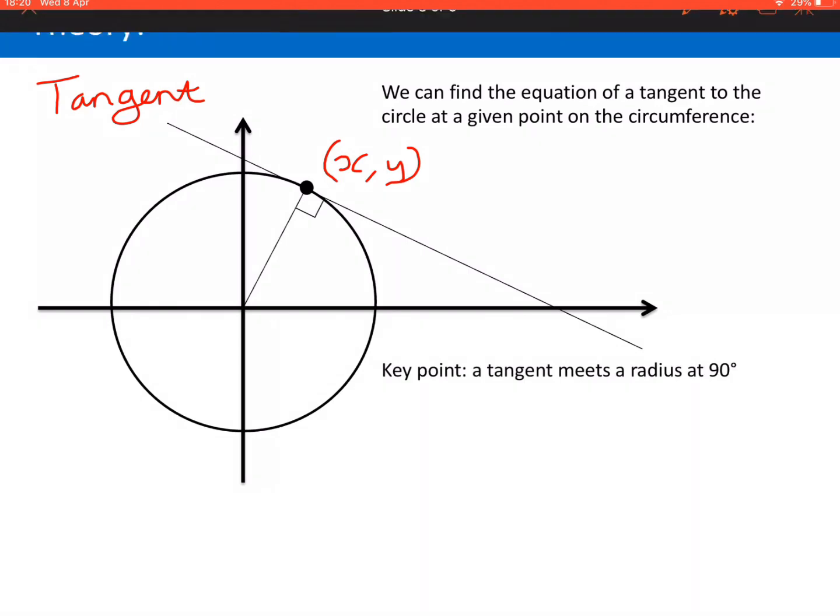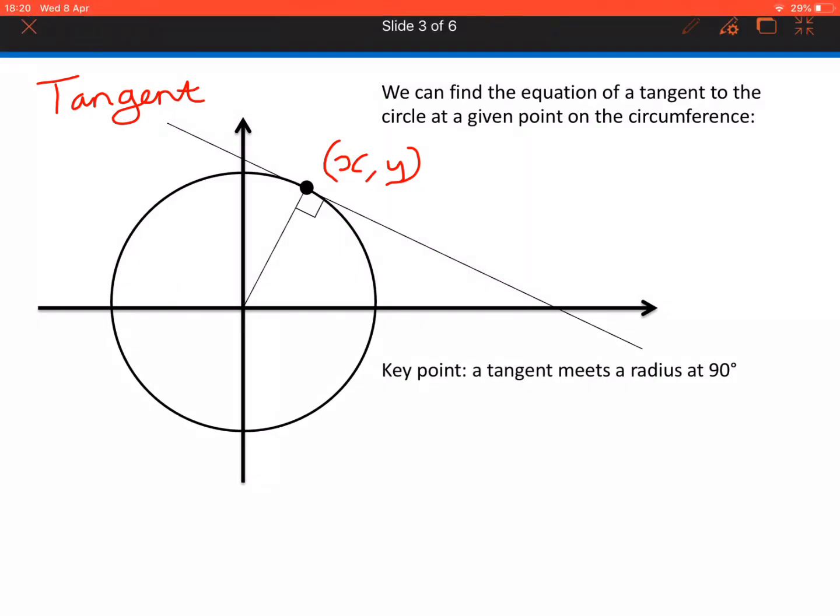For our radius, we can calculate its gradient. Because we've got the coordinates of the point, we know the x difference and the y difference between the centre of the circle and the point we're trying to find the equation of the tangent at. So we can get the gradient of the radius, let's call that m1.